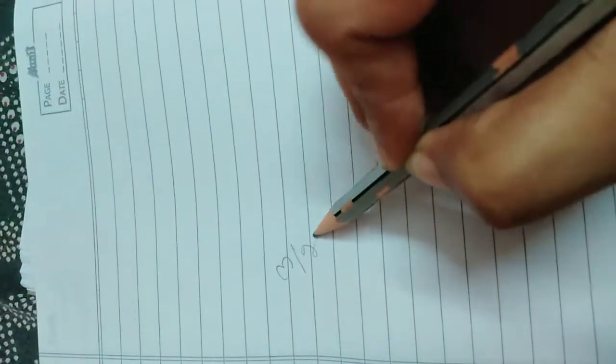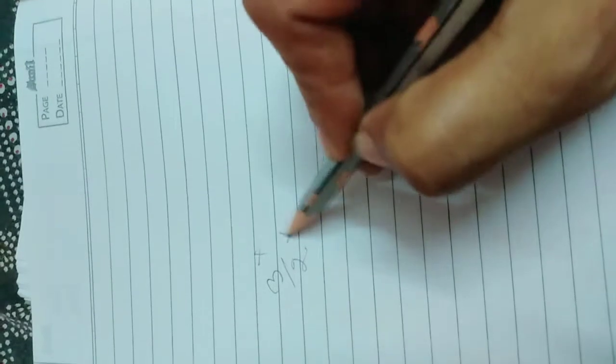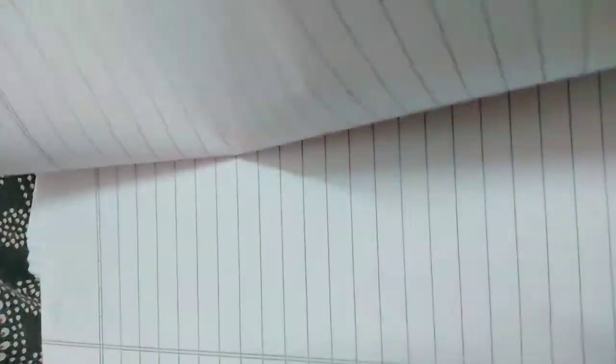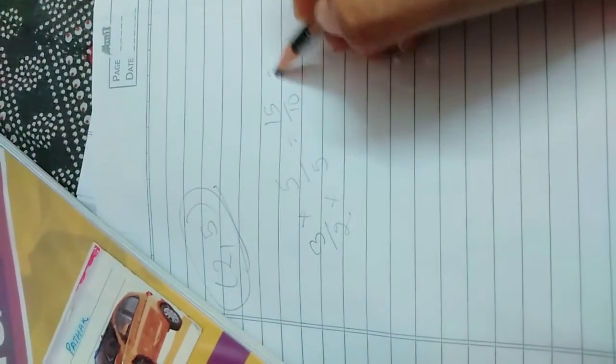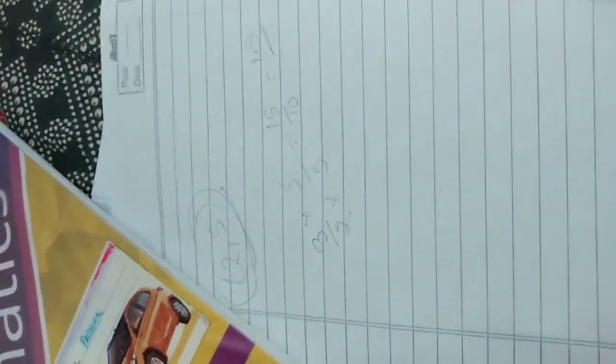Suppose you have 3 by 2. So you can multiply it with 5 by 5. Always you have to complete this pair if one of them is missing. So you can see that now this is 15 upon 10, easily you get answer 1.5.